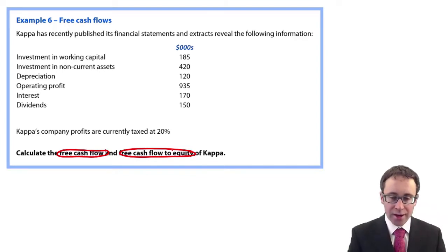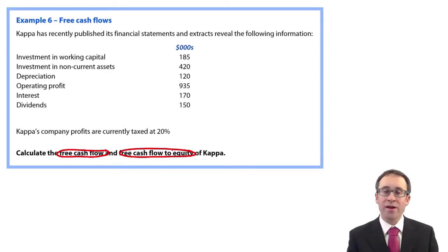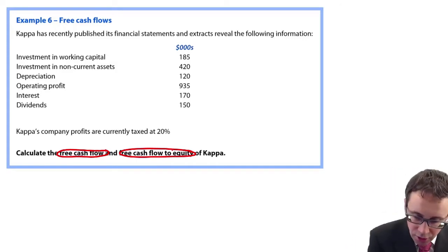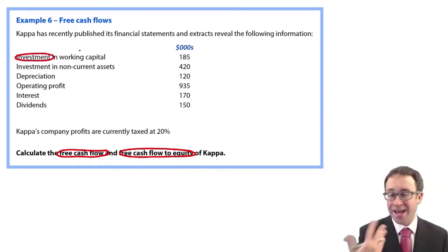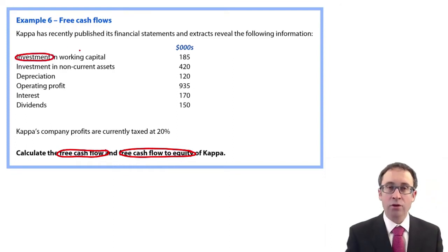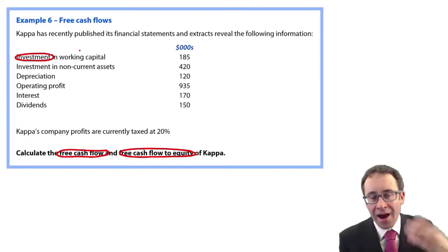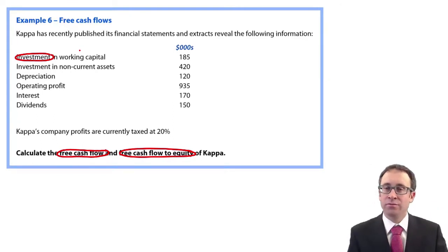So it says CAPA has recently published its financial statements and extracts reveal the following information. You've got your investment in working capital - so just note that is an investment in working capital, so effectively that must be an increase. You've also got an investment in non-current assets. That's like a net investment, so that's the outflow net of any inflow from selling your non-current assets.